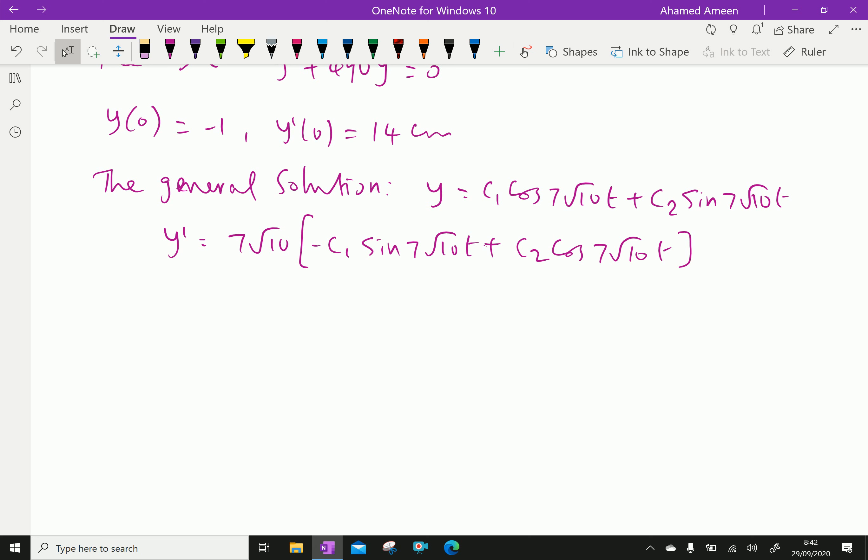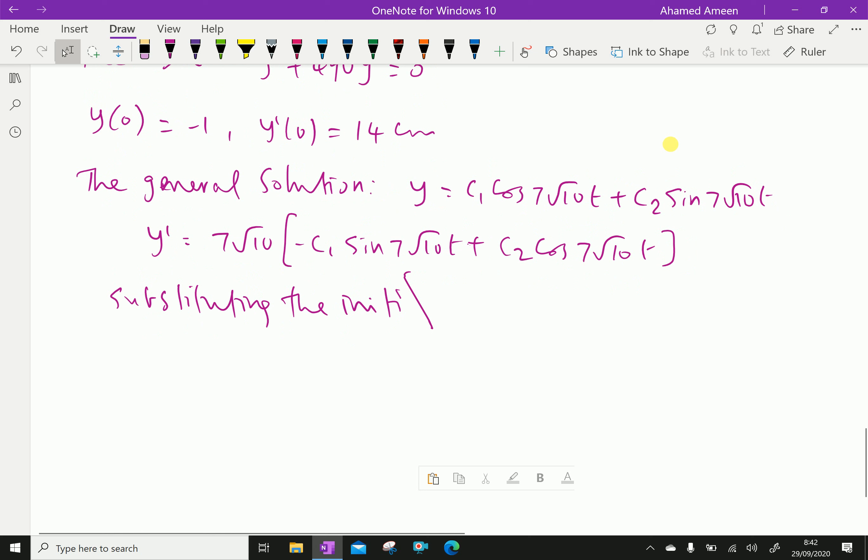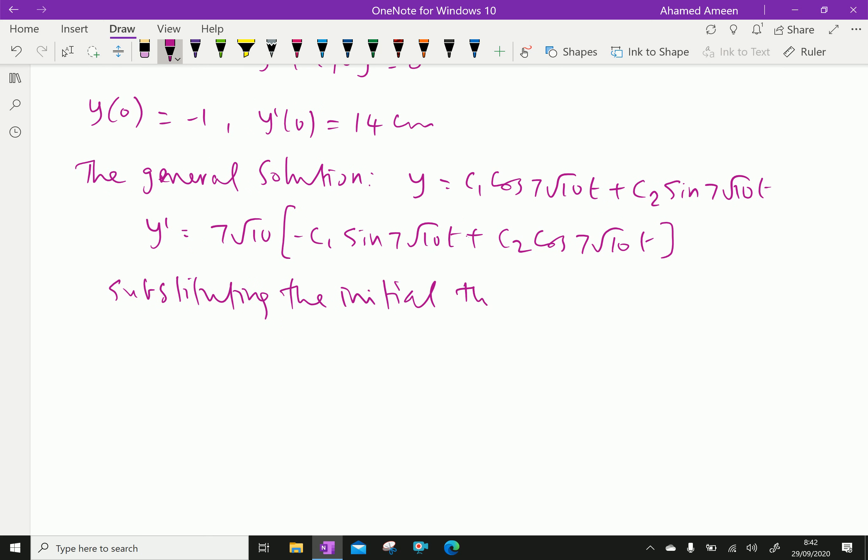Substituting the initial conditions for the above two equations, that is y and y prime, we have y equals minus cos 7 root 10 t plus 2 over root 10 sin 7 root 10 t.